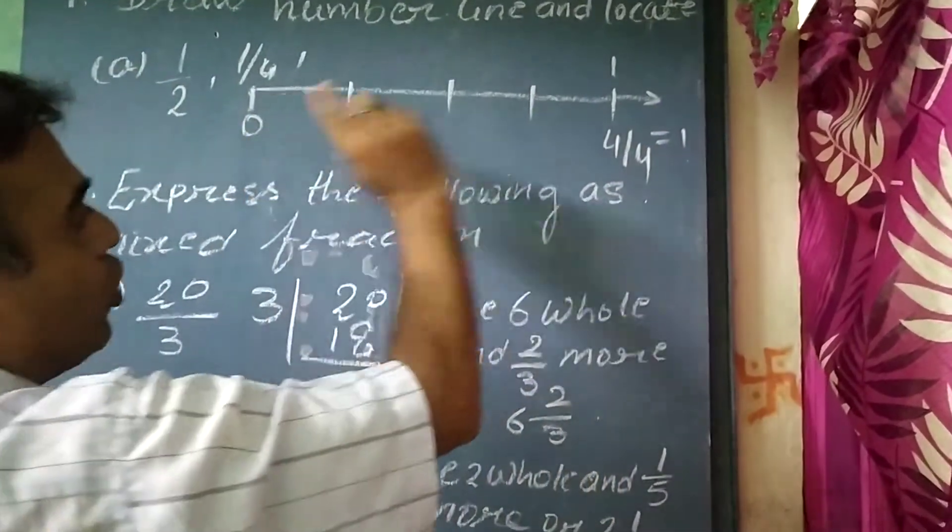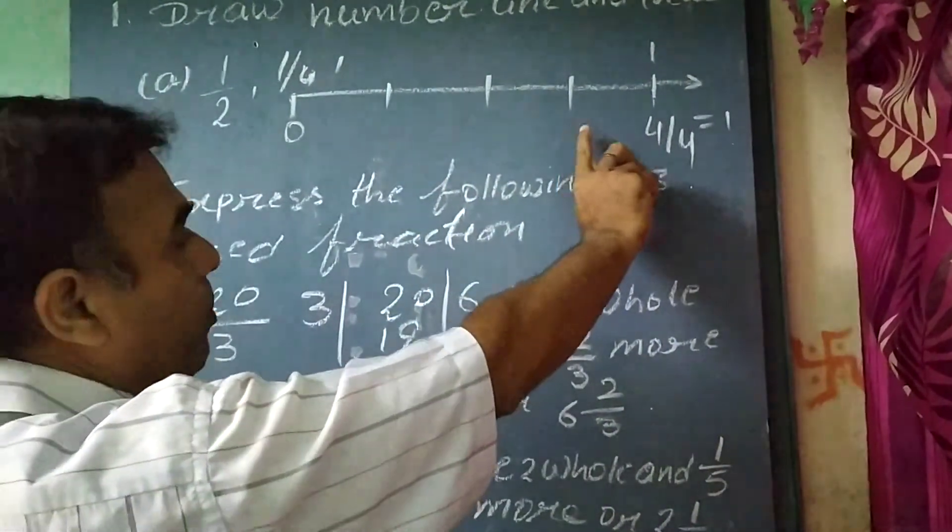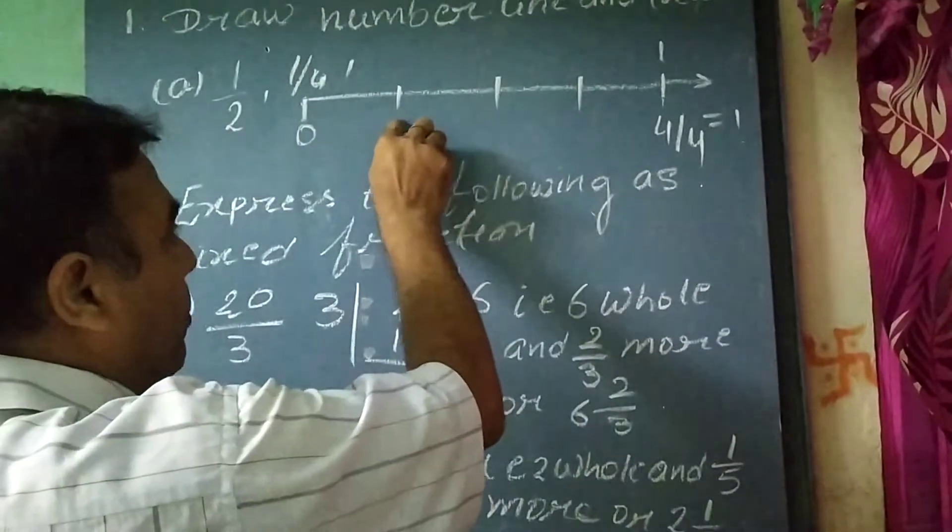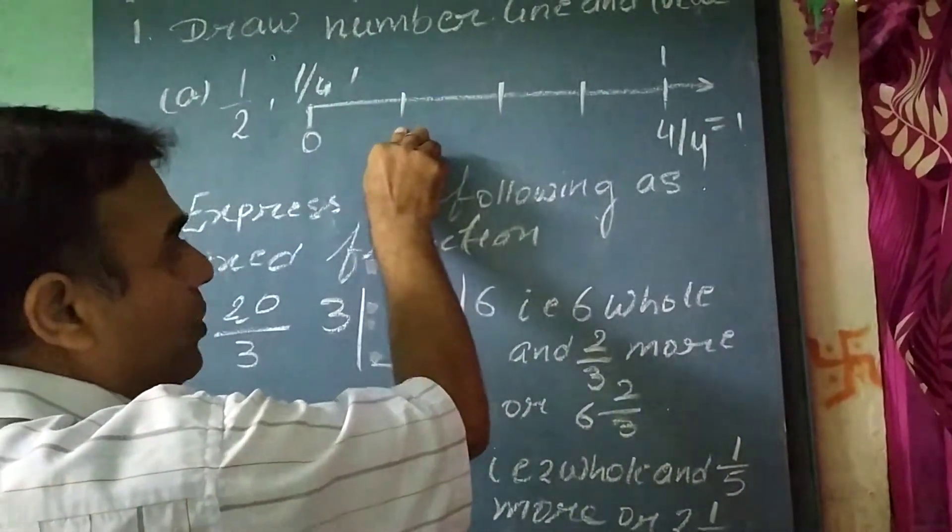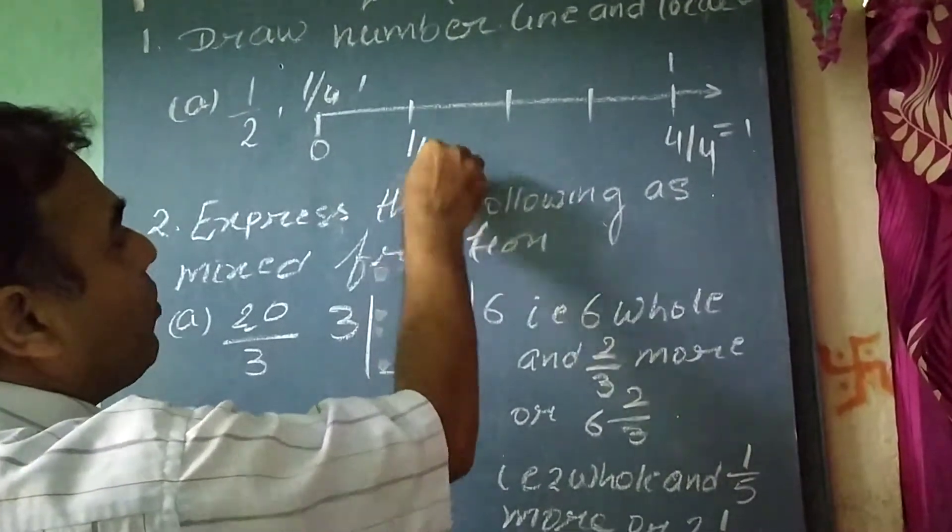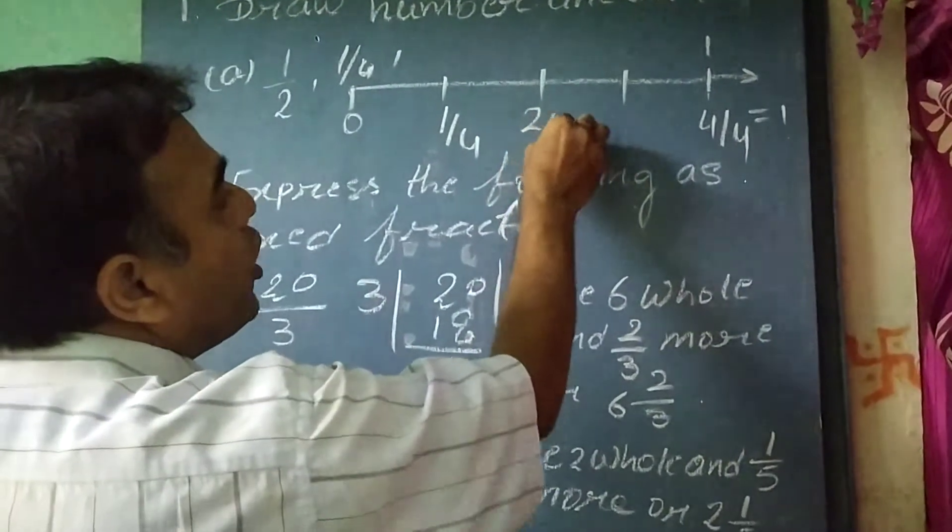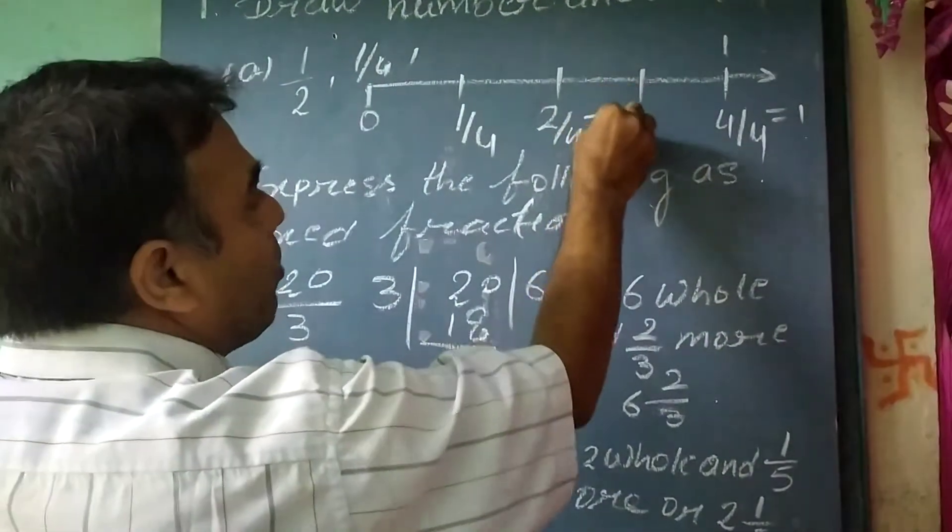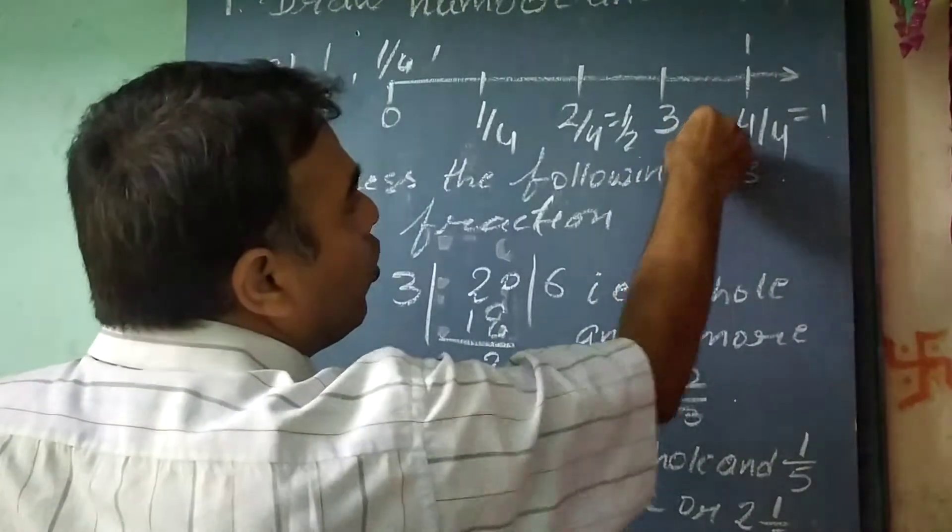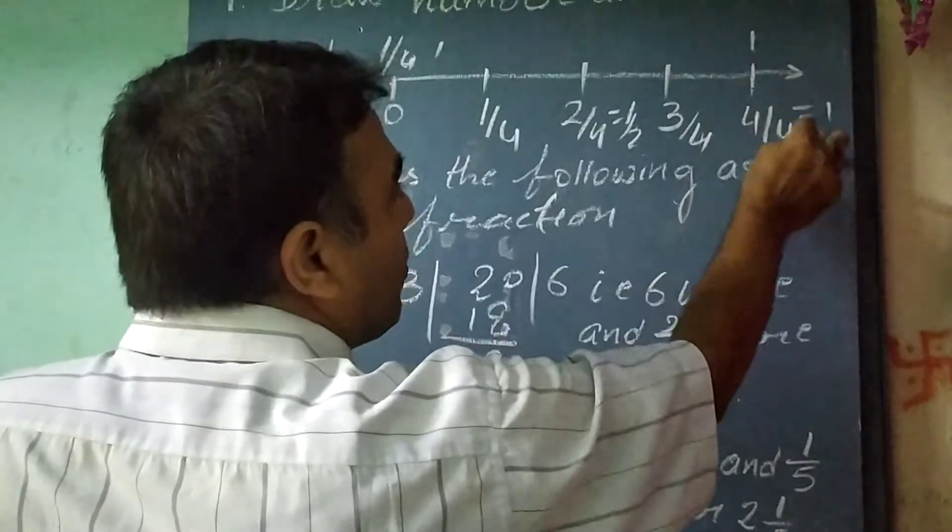From 0 to 1, we divided it into 4 equal parts. What will be the value of this point? The first part is 1/4. What will be the value of this? The second part is 2/4, which equals 1/2. This is 3/4, and 4/4 equals 1.